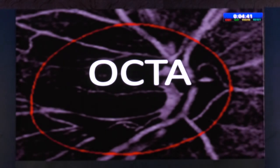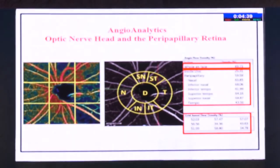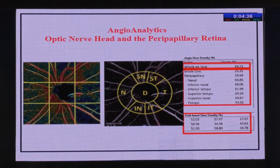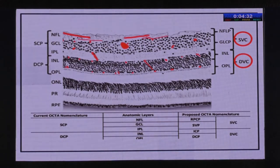A less invasive procedure is OCT-angiography, where you can obtain angio-analytics around the optic nerve head or around the macula. The two plexuses of interest are the superficial vascular complex, which measures blood flow in the nerve fiber layer and ganglion cell layer, and the deep vascular complex, which measures blood flow in the inner nucleus and outer plexiform.